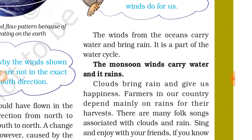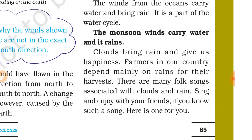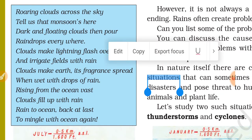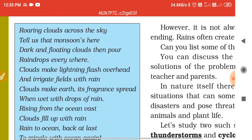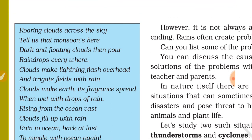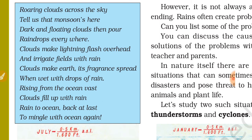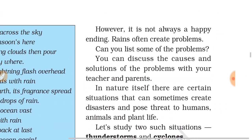The monsoon winds carry water and bring rain. Clouds bring rain and give us happiness. Farmers in our country depend mainly on rains for their harvests. There are many folk songs associated with clouds and rain. Here is one for you: 'Roaring clouds across the sky tell us monsoon is here. Dark and floating clouds pour raindrops everywhere. Clouds make lightning flash overhead and irrigate fields with rain. Rising from the ocean vast, clouds fill up with rain, and rain returns to the ocean at last.'